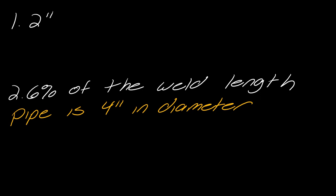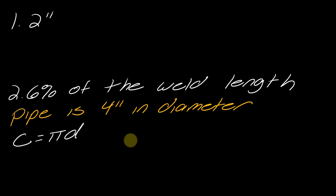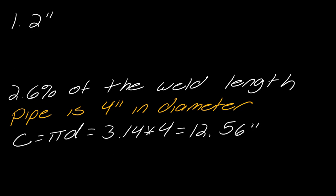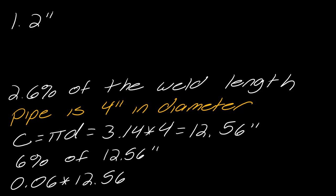This problem has several parts. Write down all the detail and work it out carefully. Let's find the circumference: π × D = 3.14 × 4 = 12.56 inches. Now, six percent of the weld length: 6% of 12.56 = 0.06 × 12.56 = 0.7536 inches.